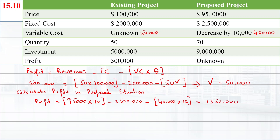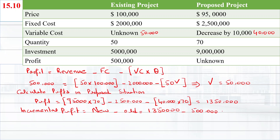Using the proposed profit, we can find the incremental profit. Incremental profit equals new minus old: $1,350,000 minus $500,000. So incremental profit will be $850,000.